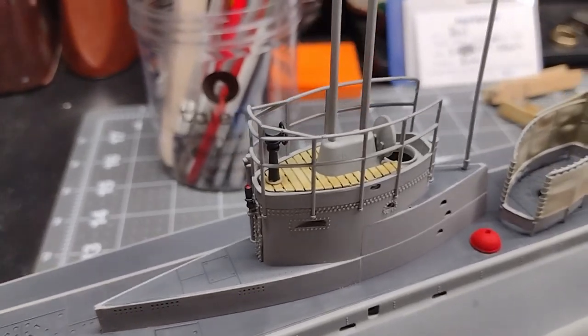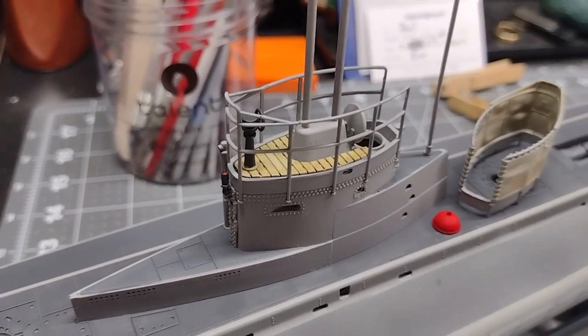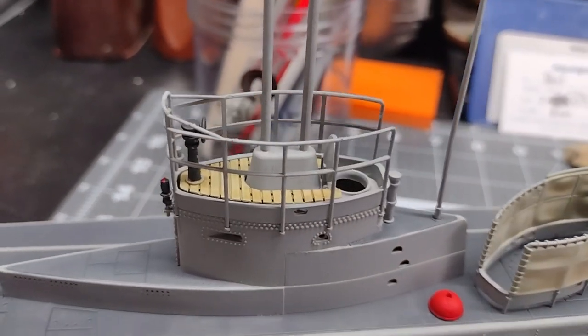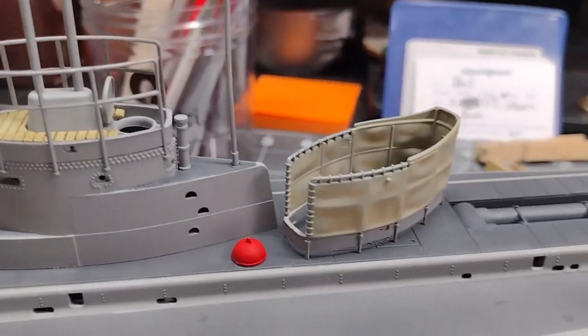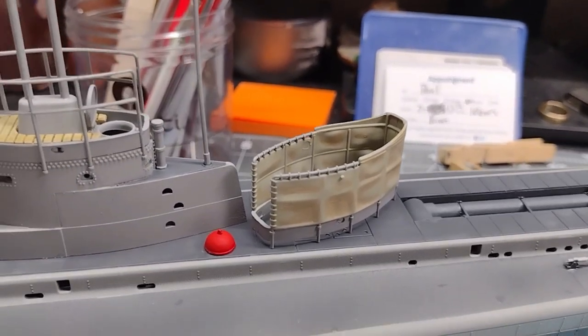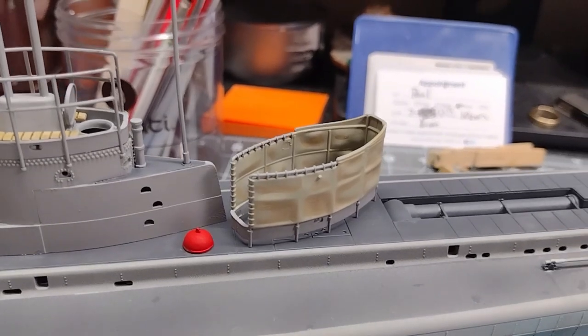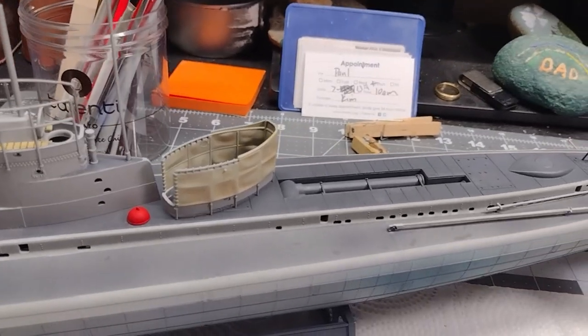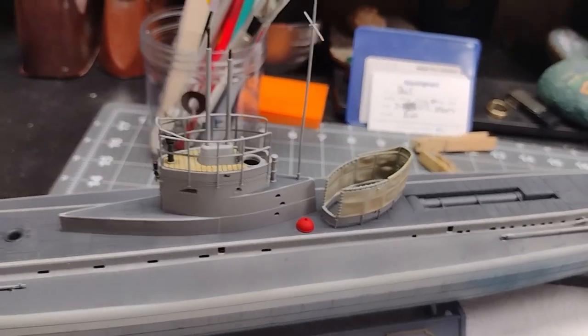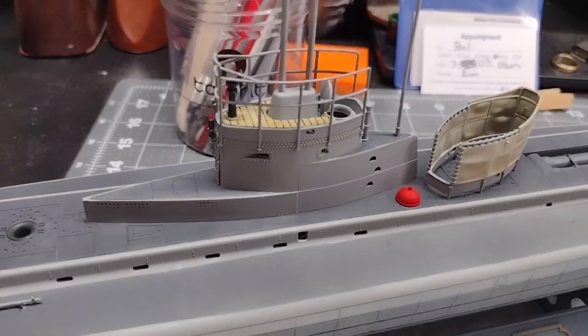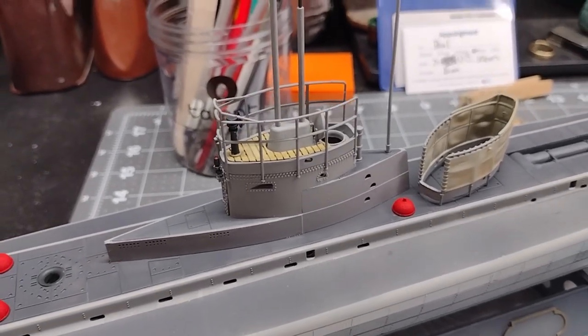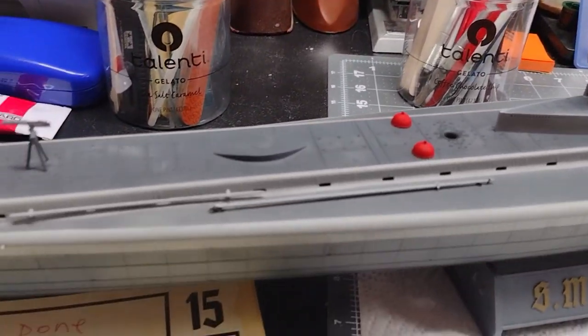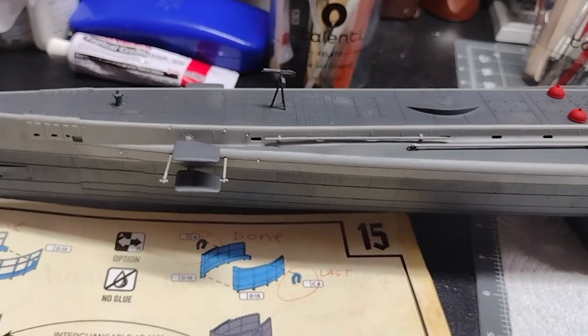Alright, I have the top railing on the conning tower. And then sitting off to the side I have the top railing with canvas on it. So I am at the point where I am going to give this model a couple coats of clear spray to be ready for decals.